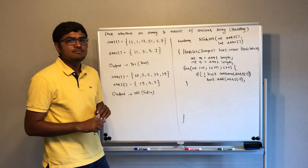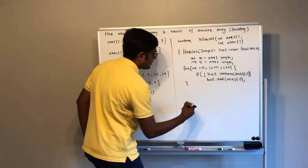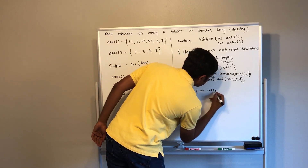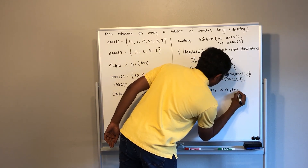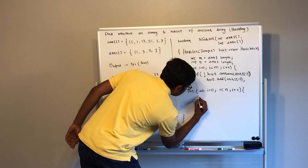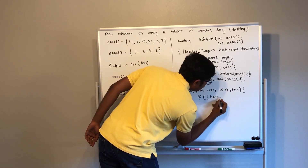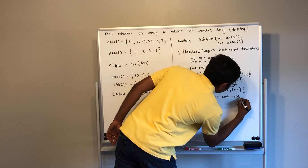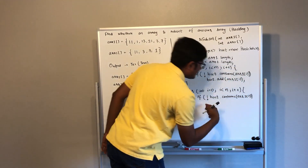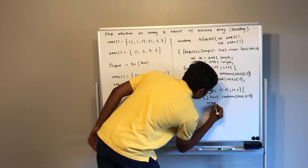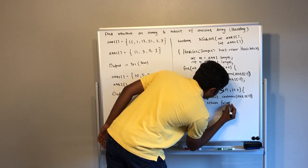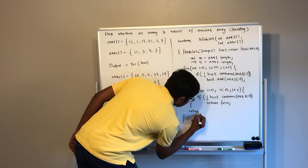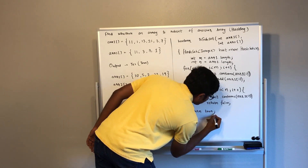Now we will iterate through all the elements of array 2 to figure out whether each element exists in the hash set or not. Even if we find one case where an element does not exist in the hash set, we can safely return false. If this loop successfully completes without returning false, that means all the elements were present in the hash set, so in that case we return true.